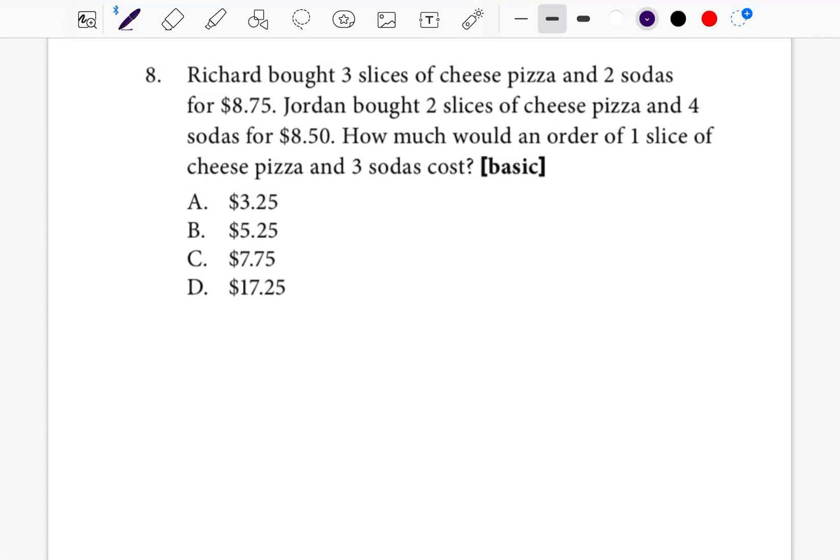Let's go ahead and review together question number eight on the TSI official practice test. It says Richard bought three slices of cheese pizza and two sodas for $8.75. Jordan brought two slices of pizza and four sodas for $8.50. How much would an order of one slice of cheese pizza and three sodas cost?